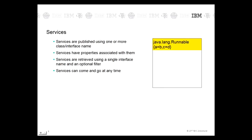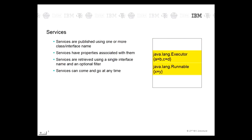In this example you can see a runnable registered with the properties A and C. Over time more services can be registered without affecting any of my clients, such as this executor service. Even another runnable can be registered with the property X. Then if I wish I can remove my original runnable and the client can switch to use another one, such as the one with property X. Service clients can use properties to choose when multiple services of the same type have been registered and only one is needed.